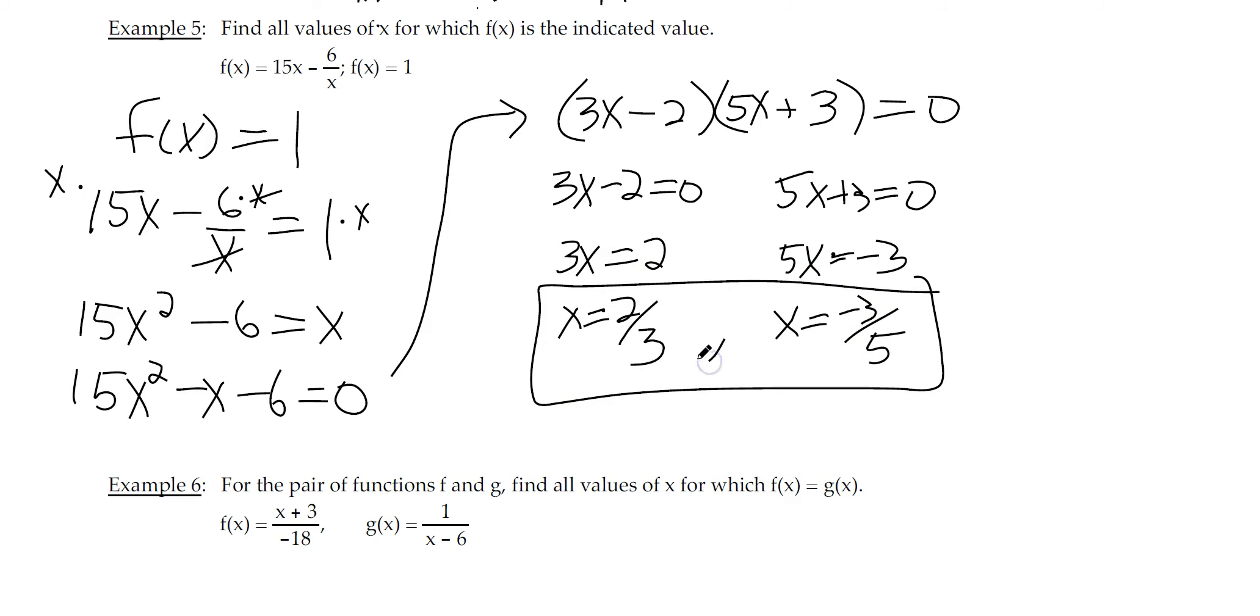So we have these two solutions. x cannot equal 0, that's the only function domain restriction. So we do not have an extraneous solution. Again, you can go to decimals or fraction button and verify that this, in fact, works. It's not too hard. For example, 2 thirds, 15 times 2 thirds minus 6 over 2 thirds. That's 10 minus 9, that equals 1. So at 2 thirds, f of x actually equals 1. Then you can check negative 3 fifths as well. So these are our two solutions. These are all the x values for which f of x equals 1.